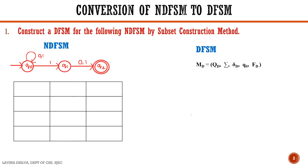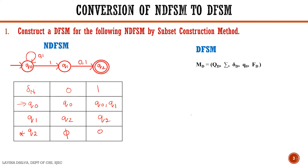Before we start the subset construction method, let us list out the transitions delta N of the NFSM. The NFSM has two inputs 0 and 1, and it has three states where Q0 is the start state. Q0 on seeing a 0 goes to Q0, whereas Q0 on seeing a 1 goes to two states Q0 and Q1. The state Q1 on seeing a 0 goes to Q2. Q2 is the final state but there is no transition defined on Q2 for any input.